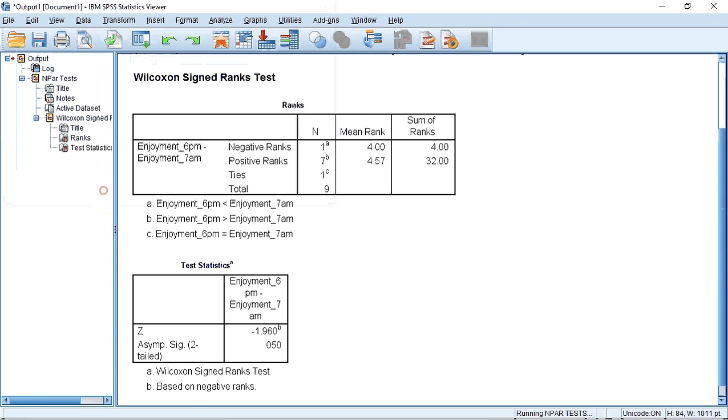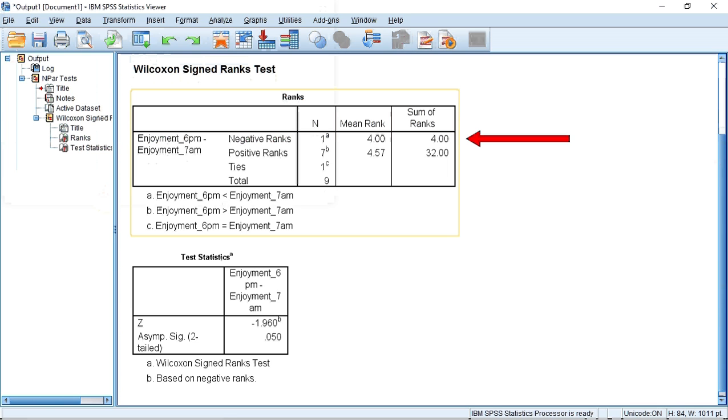The first box shows us that the sum of ranks is 4.0, but we're really interested in the asymptotic significance of a two-tailed test, which is equal to 0.050.